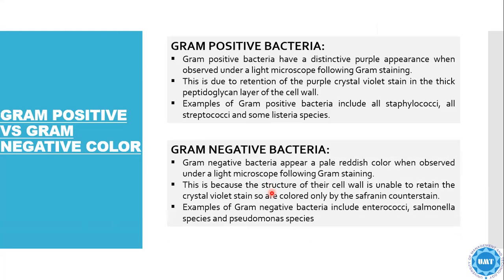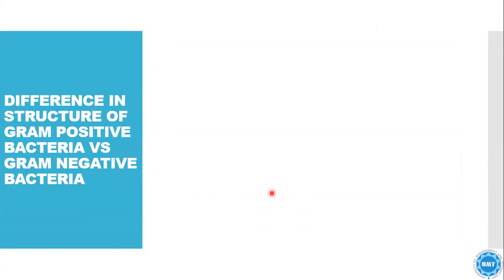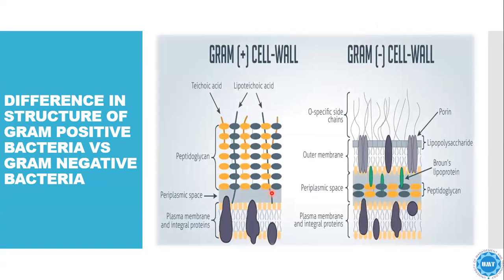Examples of gram-negative bacteria include Enterococci and Salmonella species. The structural difference between gram-positive and gram-negative bacteria is that gram-positive bacteria have lipoteichoic acid and teichoic acid, which are not present in gram-negative bacteria. There is a thick peptidoglycan layer in gram-positive bacteria, while in gram-negative bacteria the peptidoglycan layer is very thin. Gram-negative bacteria have an outer membrane and periplasmic spaces, and the difference can be seen by the thickness and thinness of both cell walls.